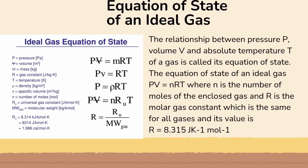Next is the equation of state of an ideal gas. The relationship between pressure P, volume V, and absolute temperature T of a gas is called its equation of state. The equation of state of an ideal gas is PV equals nRT, where n is the number of moles of the enclosed gas, and R is the molar gas constant, which is the same for all gases.